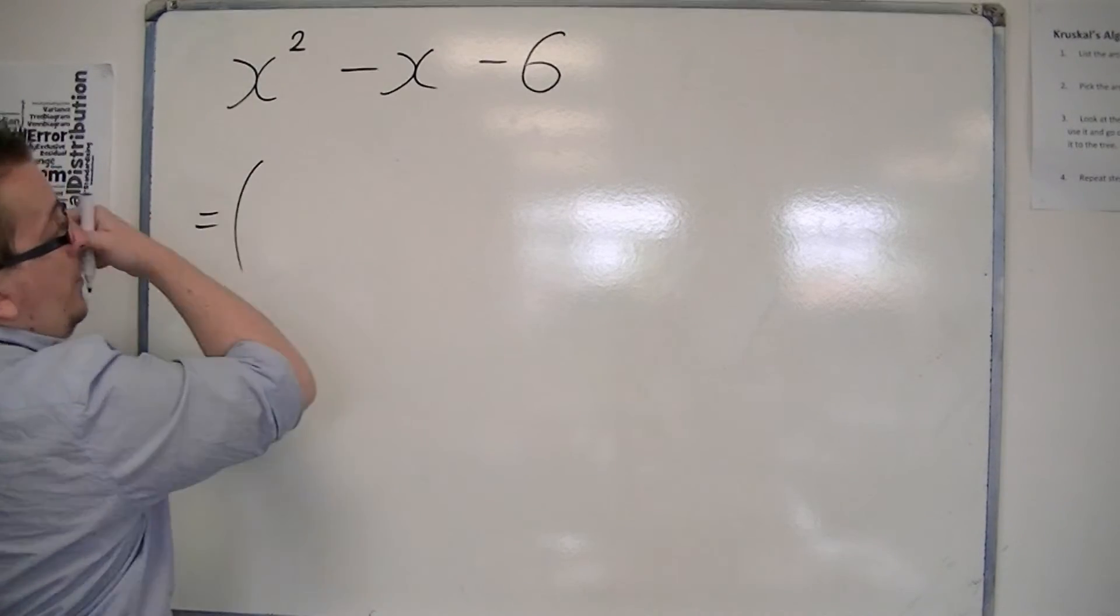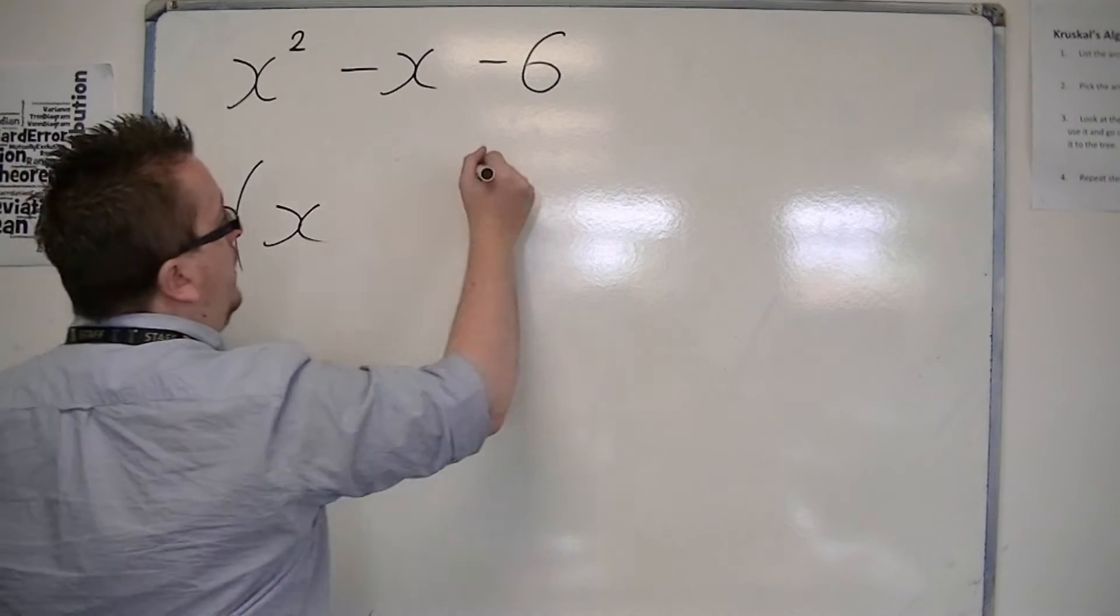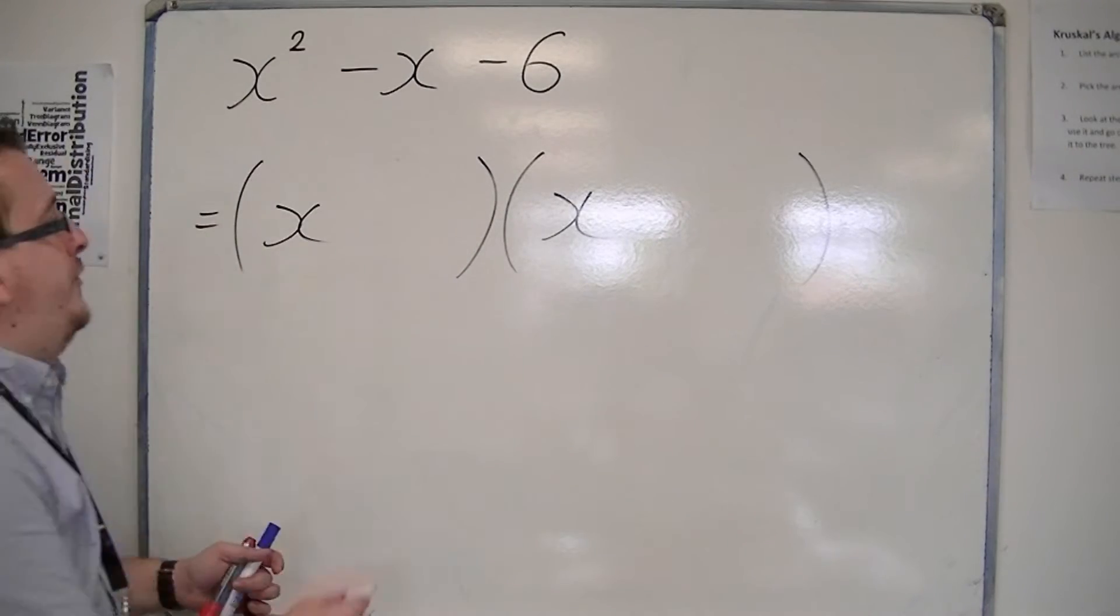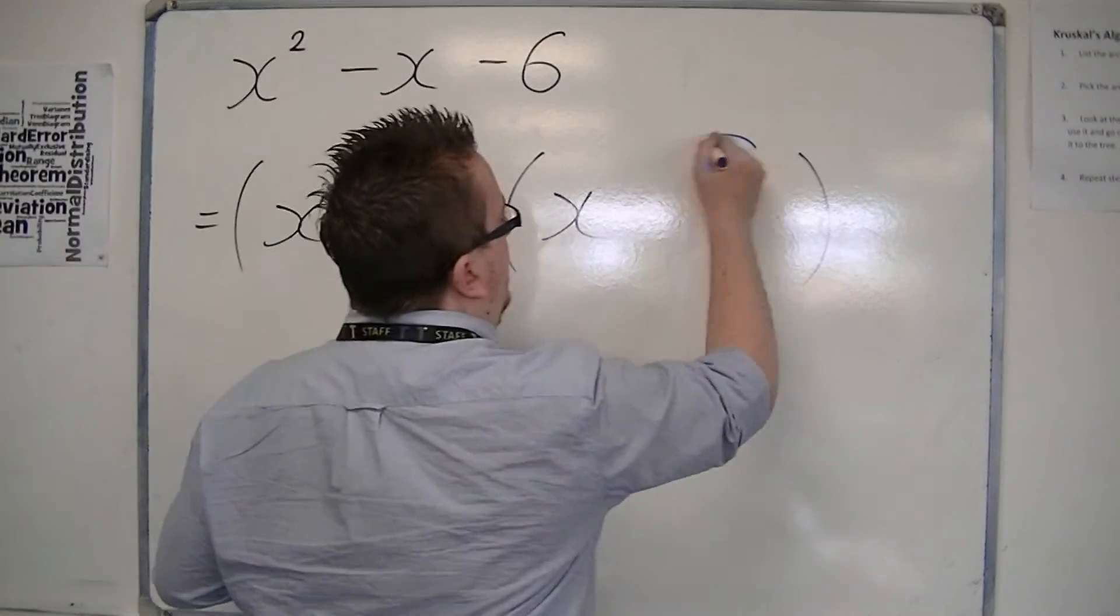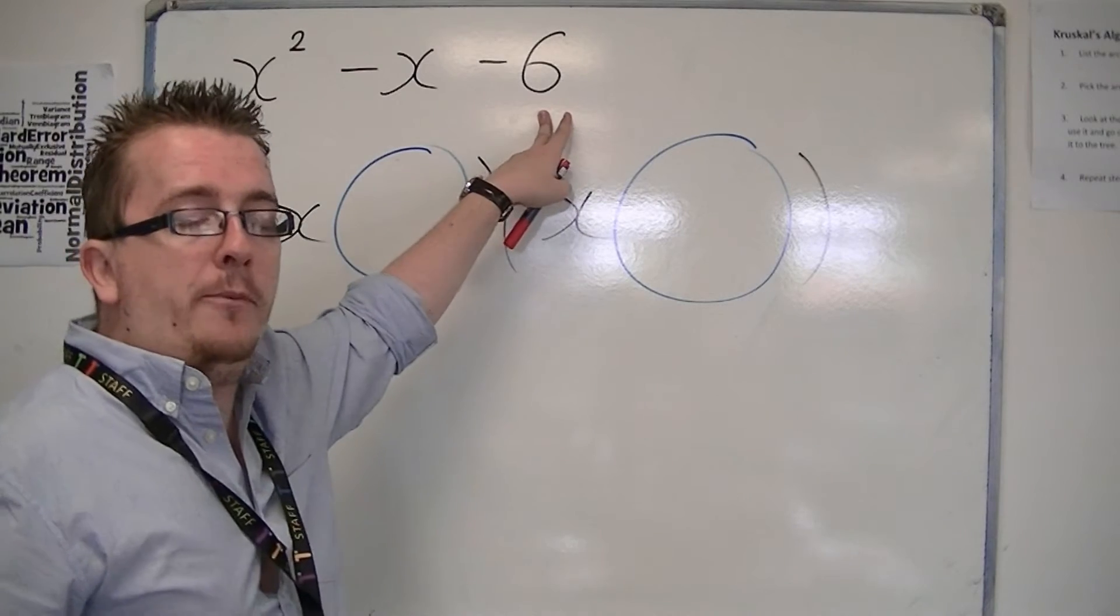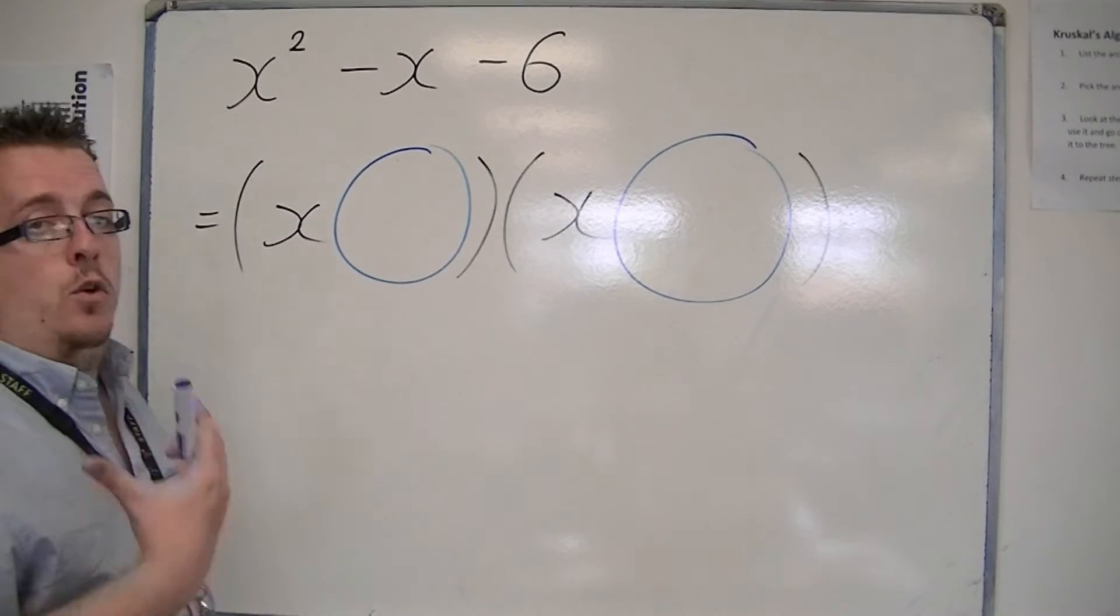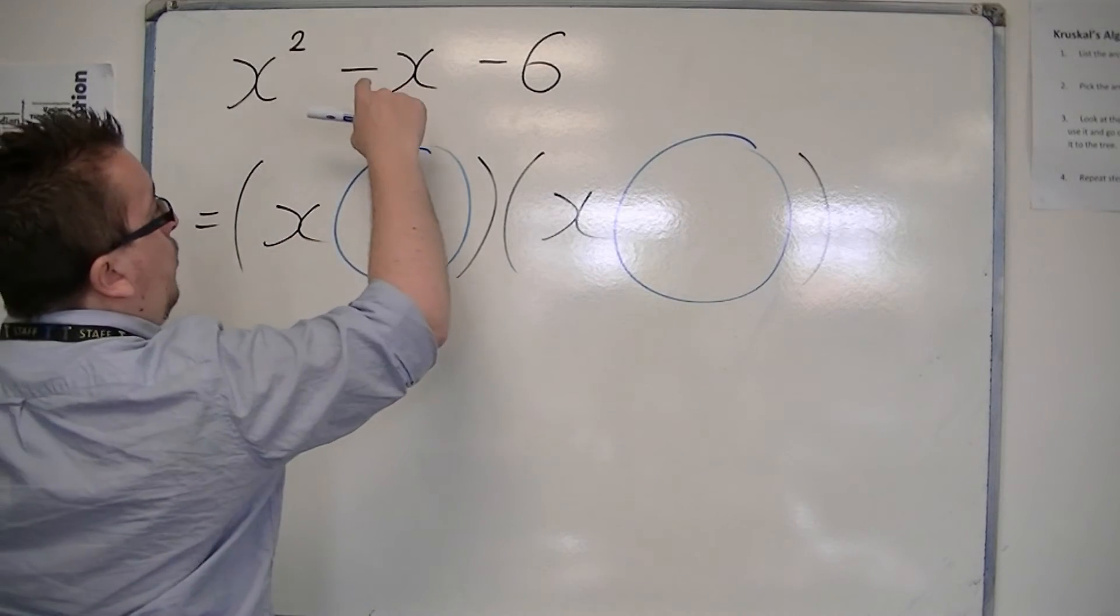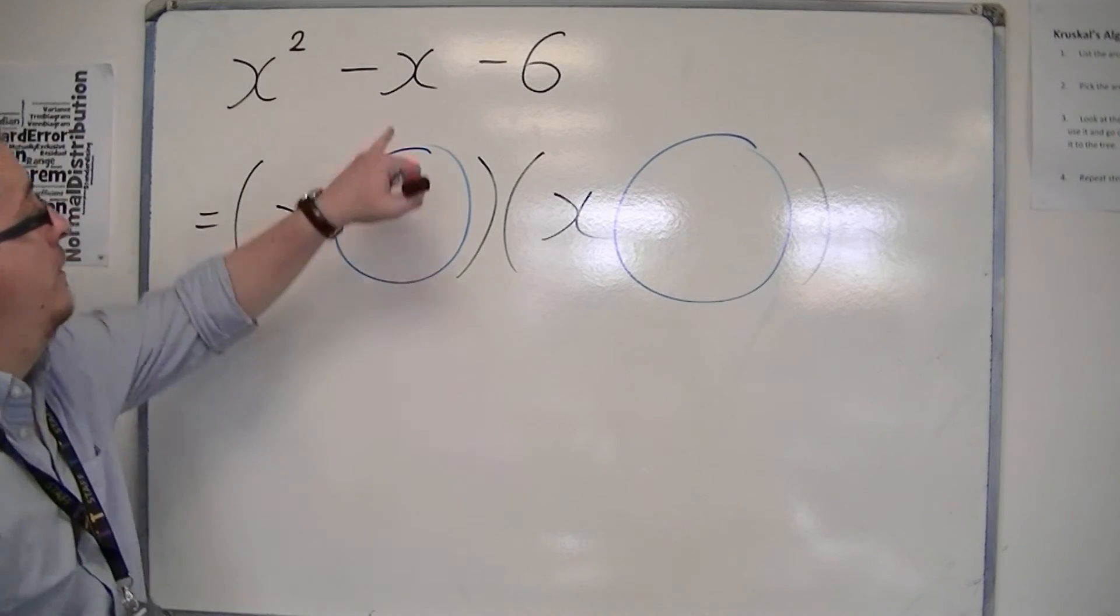Because we've got x squared and nothing, no number in front, we can have an x multiplied by an x. And the two numbers that are missing here and here need to multiply together to make the minus 6. But they also need to add together to make minus 1, the number that is in front of the x, the coefficient of the linear term.